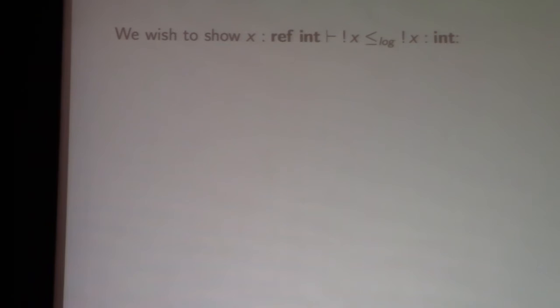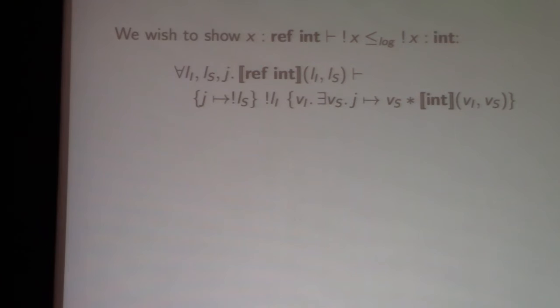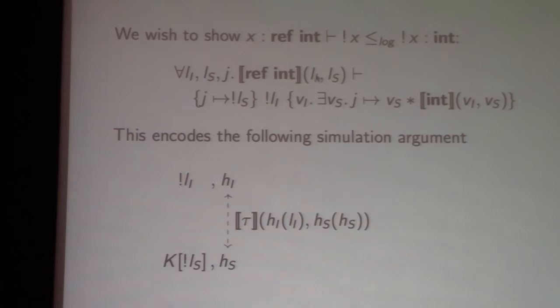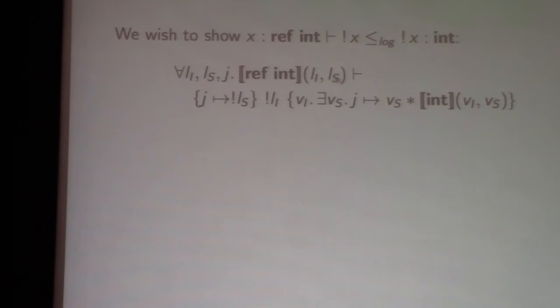Here's a small example: we want to show that dereferencing an integer reference x is related to itself. This is an open expression, so first we close it by substituting in related locations for all open variables — in this case the integer reference. Now we have an implementation location and a specification location related at the integer reference type, and we need to prove the full Hoare triple.